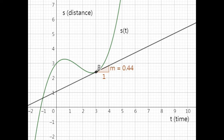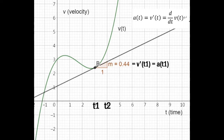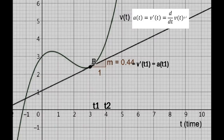In the same logic, acceleration is defined to be the change in velocity divided by the change in time. Changing the vertical axis to represent velocity with respect to time, we've shown that instantaneous acceleration can be solved by taking the derivative of the velocity function.